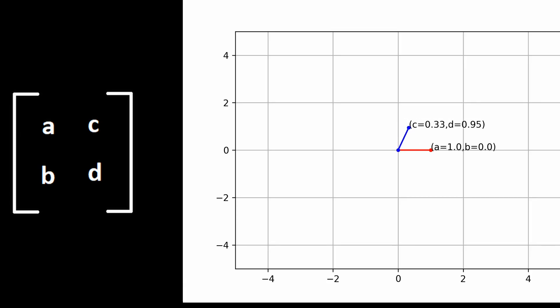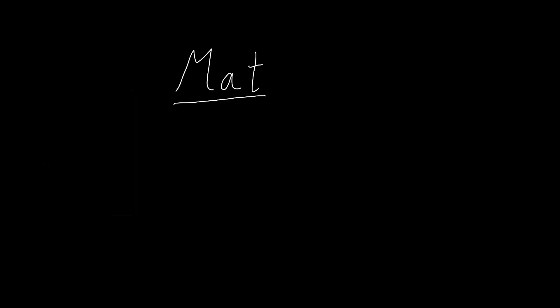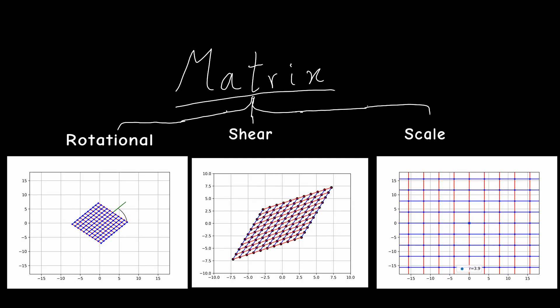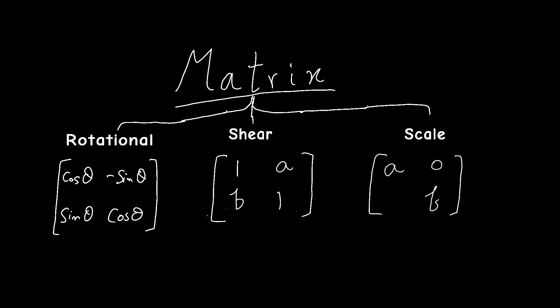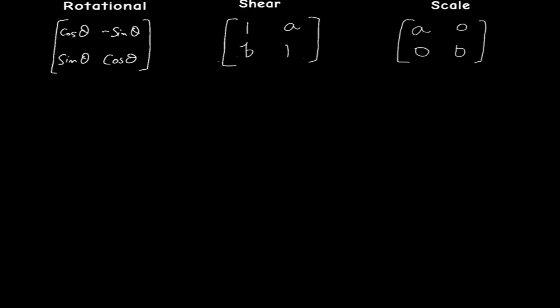Before moving on to complex matrices, let's first take a look at how real matrices work. So for a 2x2 matrix A, B, C and D, we can think of it as a linear transformation. This linear transformation is of three types: it can be rotational, it can be shearing, and it can be just expanding. Now we can easily say that any general matrix A, B, C and D can be represented by the product of these three basic matrices.